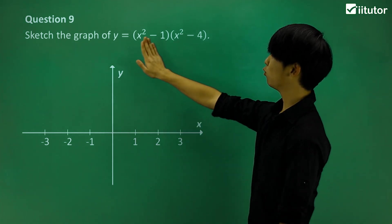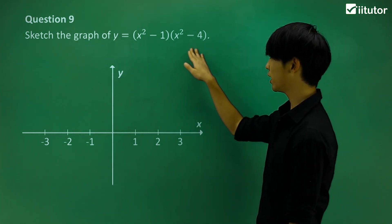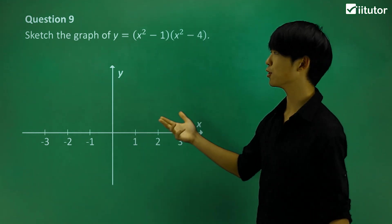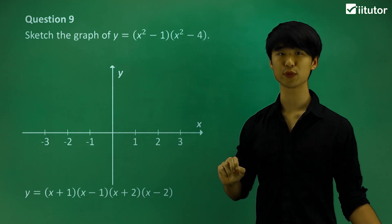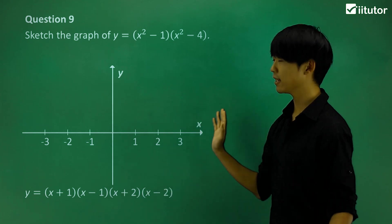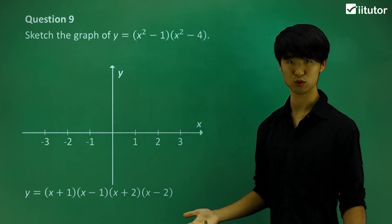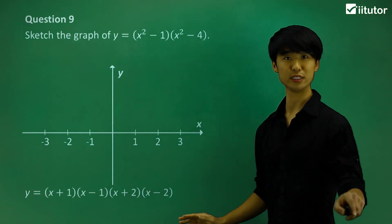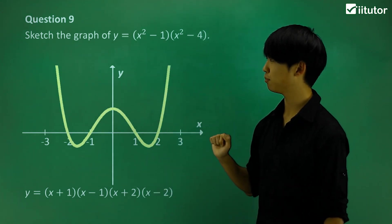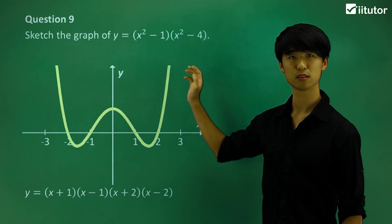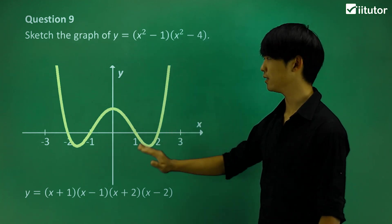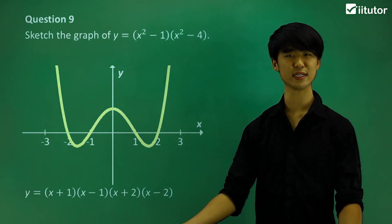Looking at question 9, we have y equals x squared minus 1, times x squared minus 4. Don't get confused — there are no double roots here. We factorize further using difference of two squares: x squared minus 1 becomes x plus 1 times x minus 1, and x squared minus 4 becomes x plus 2 times x minus 2. This gives us four single roots at x equals negative 2, negative 1, 1, and positive 2. It's a positive graph, so it looks like a standard positive quartic. Always factorize as much as possible, then identify the roots. That's how we sketch quartic graphs.